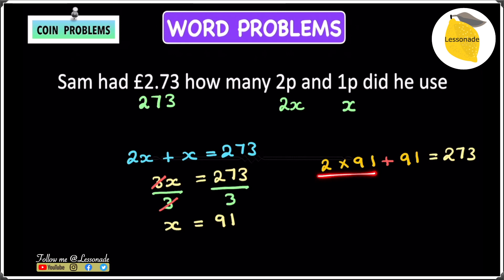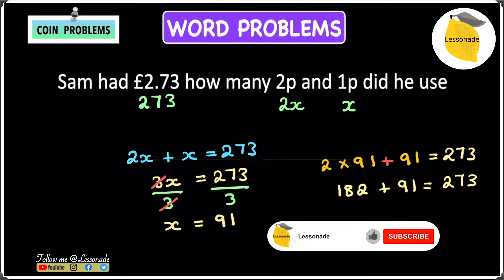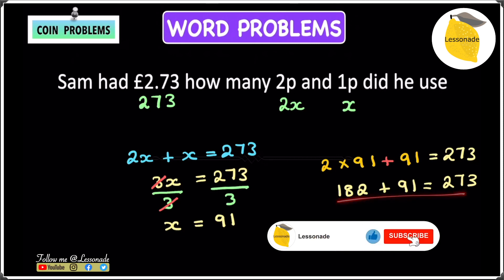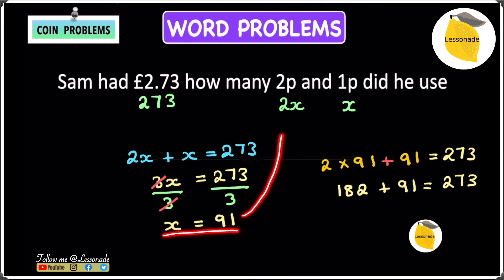So 2 times 91 will give you 182. And then plus the other 91 will give you 273. And if you notice, this does work. And therefore, x must equal 91. And we have 91 two-pence and 91 one-pence.